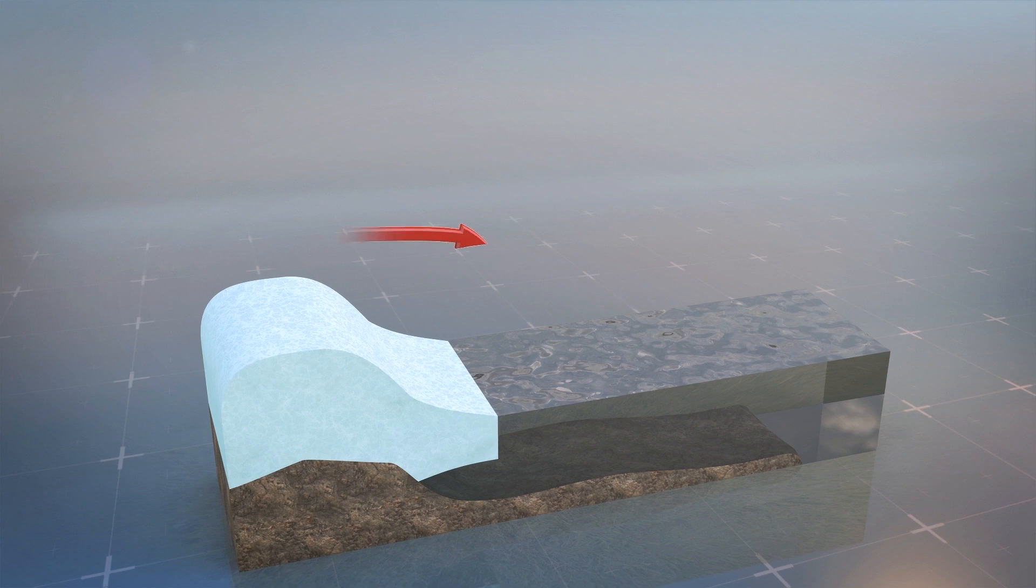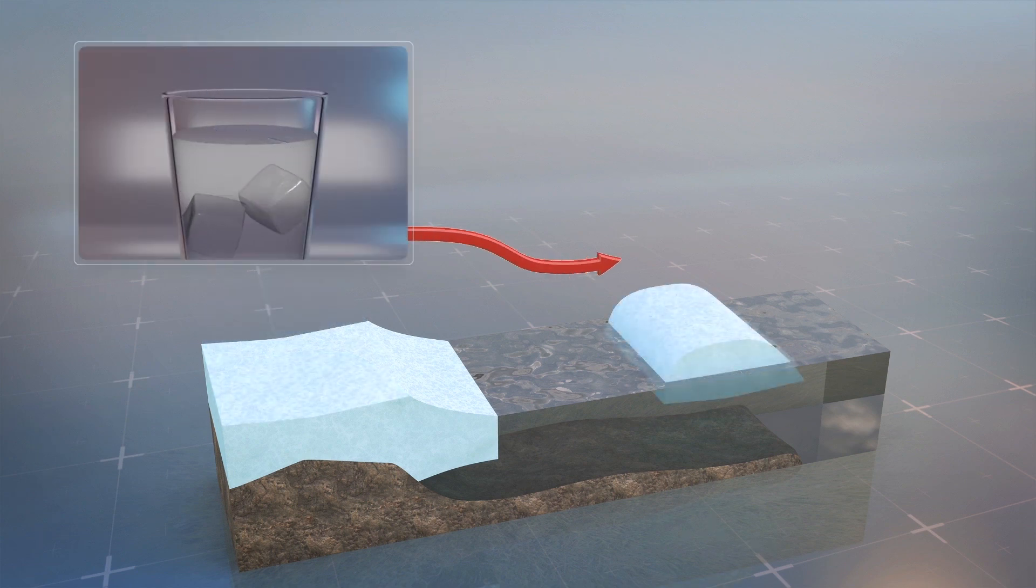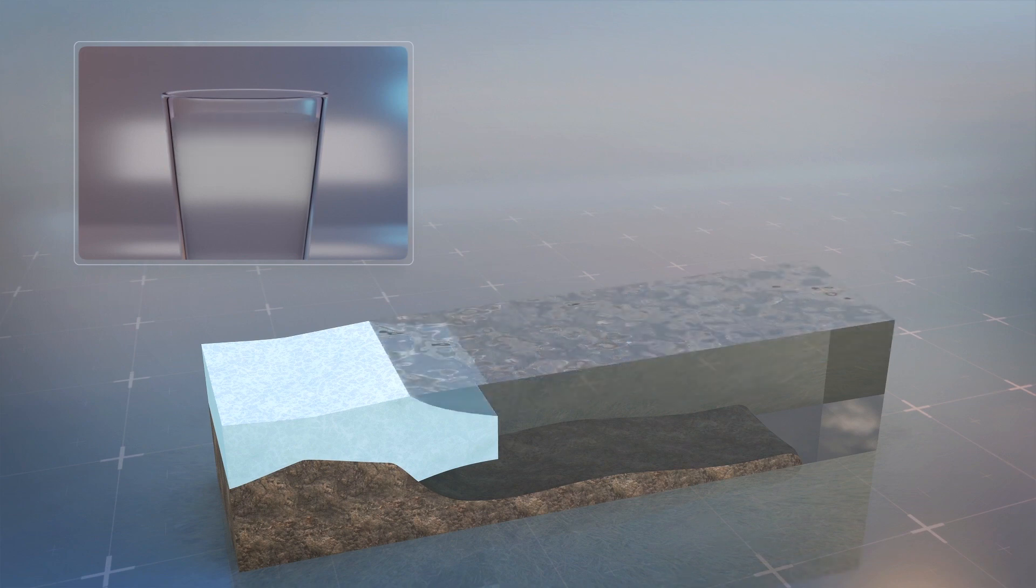This in contrast to glaciers or ice sheets, which do cause sea level rises when they melt, as they join the ocean having previously been resting on land.